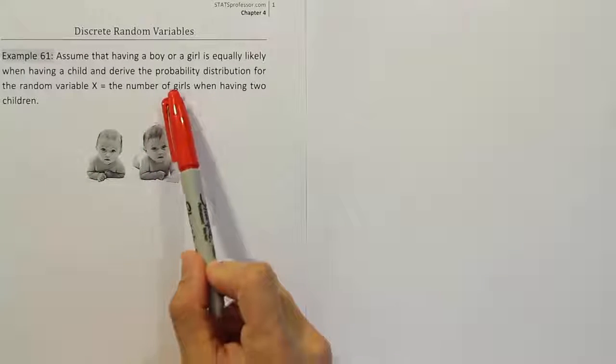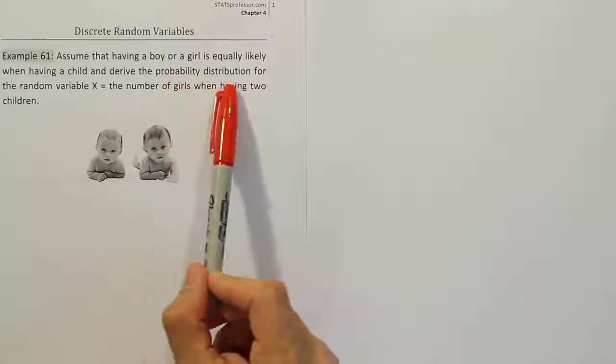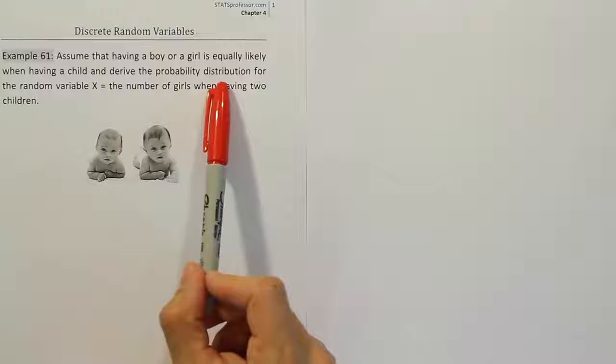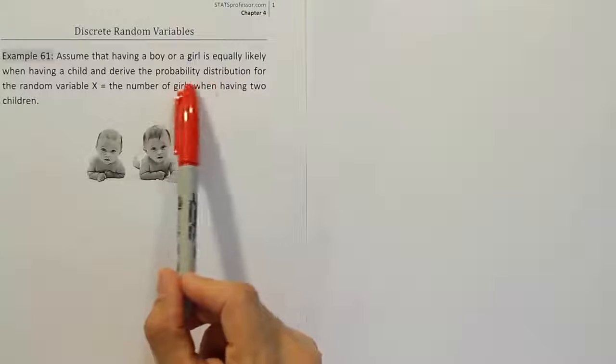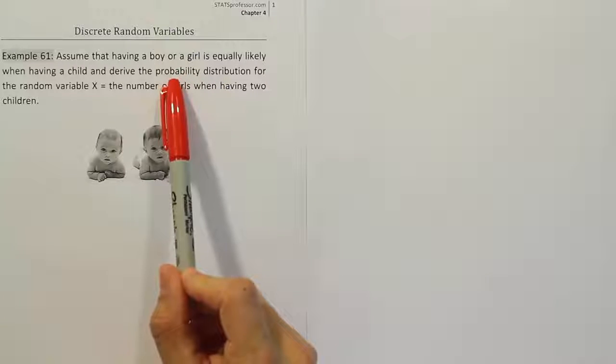To derive a probability distribution, we have to first define what that is. A probability distribution is essentially a table, or could be a graph or a formula, that lists all the possible outcomes for a certain experiment and all the associated probabilities.